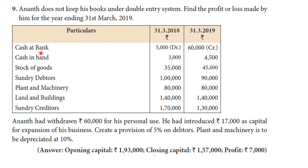As on 31st March 2019: cash and bank 60,000; cash in hand 4,500; stock of goods 45,000; sundry debtors 90,000; plant and machinery 80,000; land and buildings 1,40,000; sundry creditors 1,30,000.